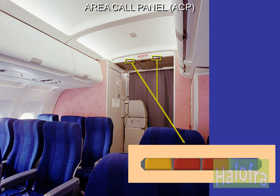The area call panel, ACP, indicates crew calls (pink steady or flashing), passenger call (blue steady), lavatory call (amber steady), and lavatory smoke detection (amber flashing). The ACPs are installed in the cabin ceiling at both ends of the passenger compartment.